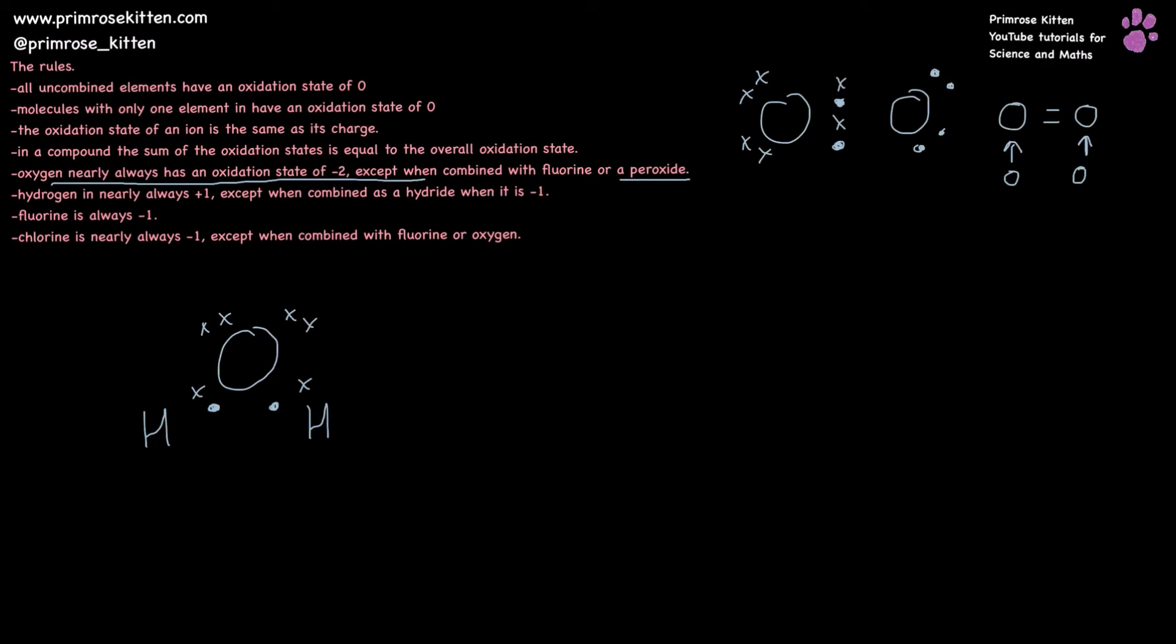In water, because oxygen is more electronegative, these electrons are not going to be hanging around in the middle. They are going to be shifted over this way. So oxygen has effectively gained two electrons and hydrogen has lost one.